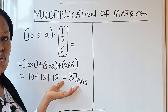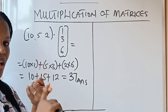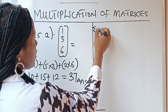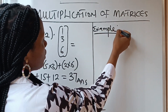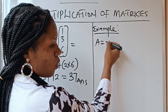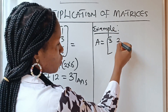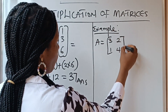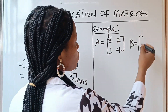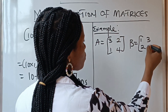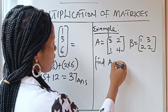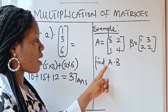Now let us go to a 2 by 2 matrix. When you are asked to multiply a 2 by 2 matrix by a 2 by 2 matrix — say, for example — we have A equal to [3, 2; 1, 4] and B equal to [1, 3; 2, 2], and we are asked to find or evaluate A·B, meaning A times B.